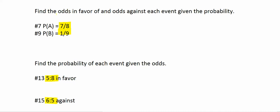So in the first two examples, I'm going to find the odds in favor of and the odds against each event given its probability. So the first probability is 7/8. So that means there are 7 in favor events and then 8, the denominator for probability, is always your total events.